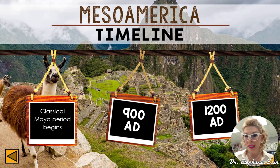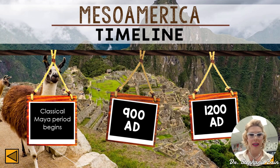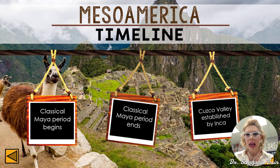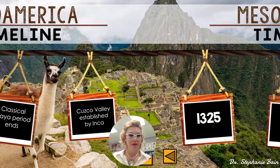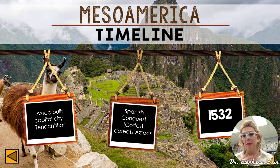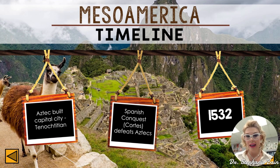Moving into the AD timeline: 250 AD the Classical Maya period begins; 900 AD the Classical Maya period ends — this was the height of their power. In 1200 AD the Cusco Valley was established by the Incas. By 1325 the Aztecs were at the height of their power, building Tenochtitlan, which is present-day Mexico City. Then comes the Spanish conquest: Cortez defeats the Aztecs, and in 1532 the Spanish defeat the Incas.